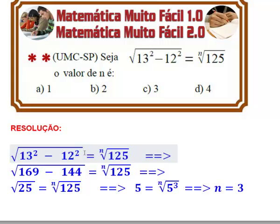Mas gente, são números tão fáceis que eu posso trabalhar. O 13 ao quadrado isso dá 169. O 12 ao quadrado dá 144. Então, eu tenho a raiz quadrada de 169 menos 144. Isso é igual a raiz n de 125.